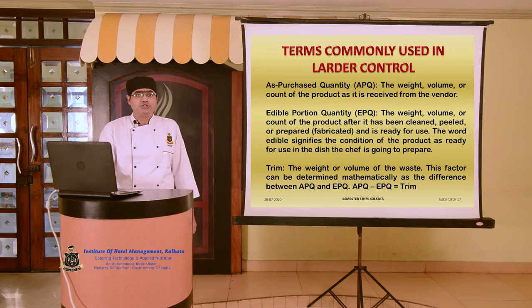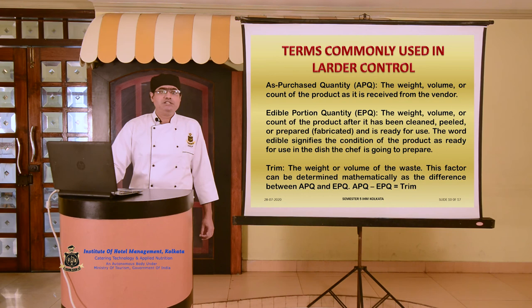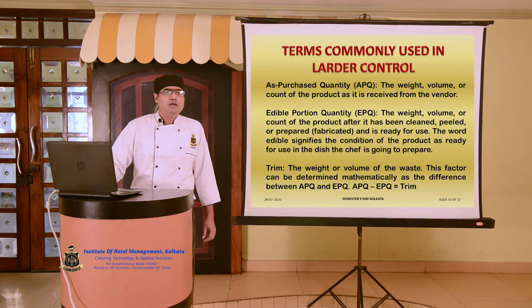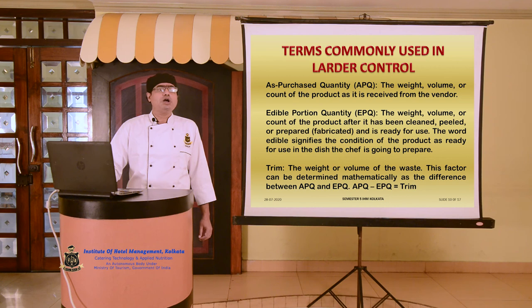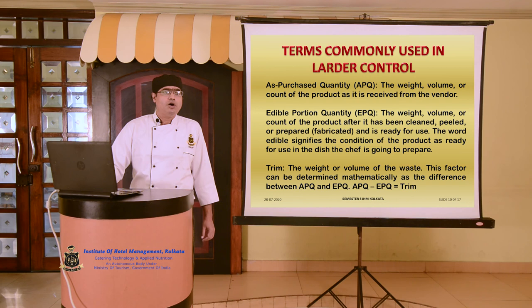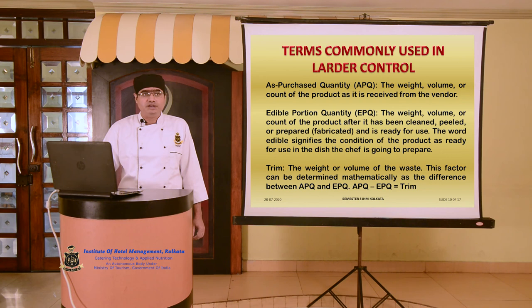Before going into the calculation of yield percentage, let us first understand the terms commonly used in larder control. As Purchase Quantity or APQ refers to the weight, volume, or count of the product as it is received from the vendor — it denotes the actual weight of the raw material procured by the hotel. Edible Portion Quantity or EPQ is the weight, volume, or count of the product after it has been cleaned, peeled, prepared, or fabricated and is ready for use, referring to the pre-cooking yield stage.